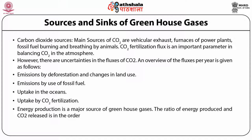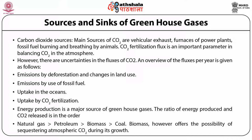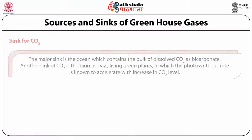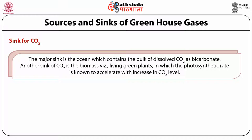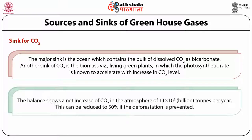Energy production is a major source of greenhouse gases. The ratio of energy produced to carbon dioxide released is in the order: natural gas, followed by petroleum, followed by biomass, followed by coal. Biomass offers the possibility of sequestering atmospheric carbon dioxide during its growth. The major sink of carbon dioxide is the ocean, which contains the bulk of dissolved carbon dioxide as bicarbonate. Another sink is biomass with living green plants, in which the photosynthetic rate accelerates with increase in carbon dioxide level.